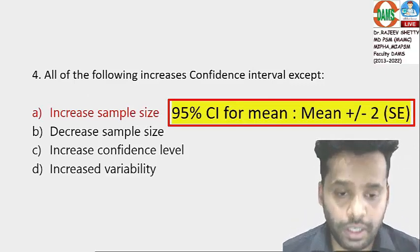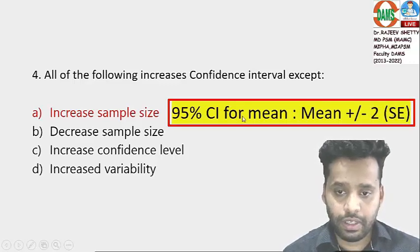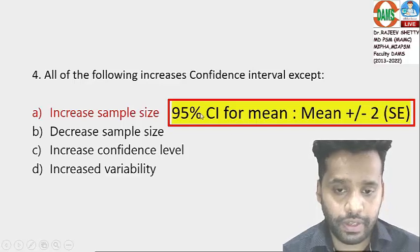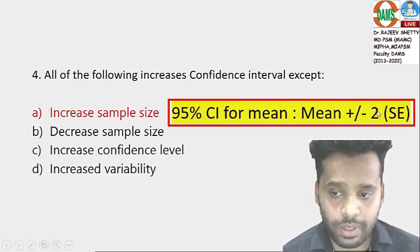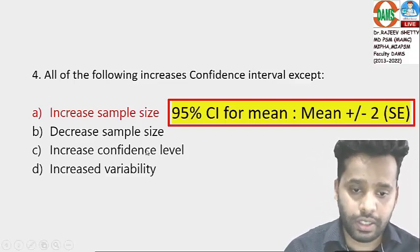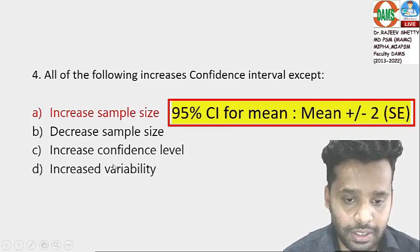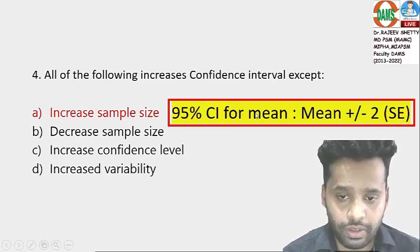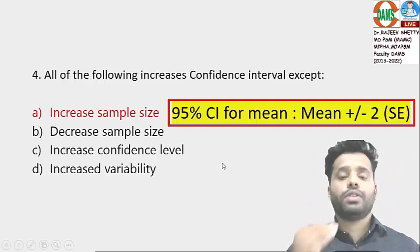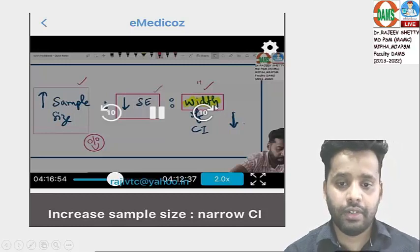The other options: decrease in sample size — if sample size decreases, error increases, so the width increases. Increase in confidence level — at 95% confidence the multiplier is 2, but at 99% confidence the multiplier is 2.6, so the confidence interval width increases. Increase in variability means standard error increases, and the width of the confidence interval increases. So the odd one out is increase in sample size, which reduces the confidence interval width.